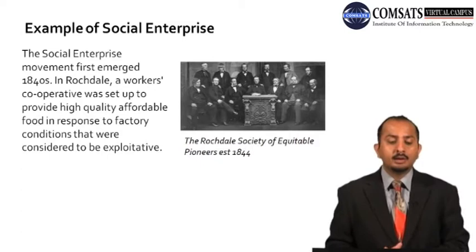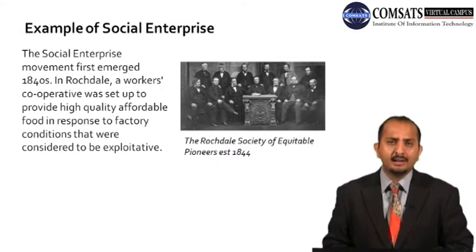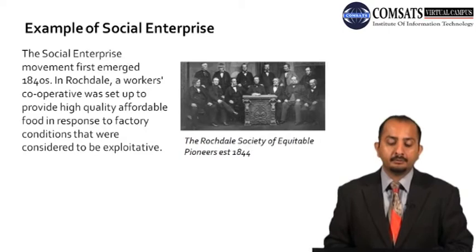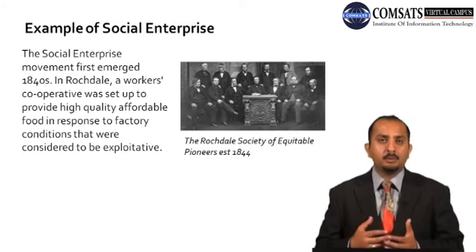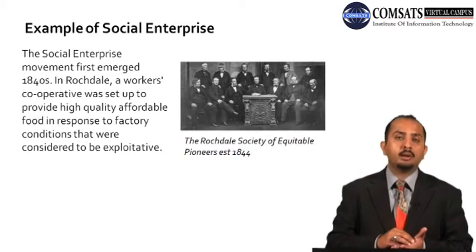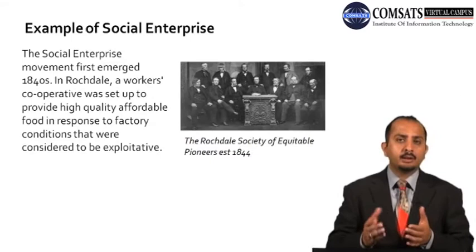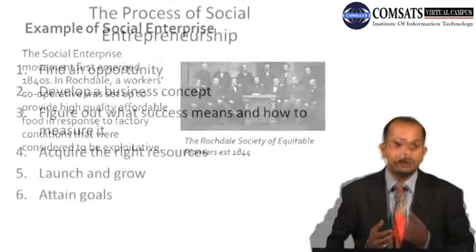The social enterprise movement first emerged in the 1840s in Rochdale, a town in the United Kingdom near Manchester. A workers' cooperative was set up to provide high quality, affordable food in response to factory conditions that were considered to be exploitative. The factory conditions were terrible and people were not happy. To cater to the issues of food quality and high prices, a cooperative was created whose fundamental purpose was to earn profit but offer goods to workers at a reasonable price, increasing their affordability.